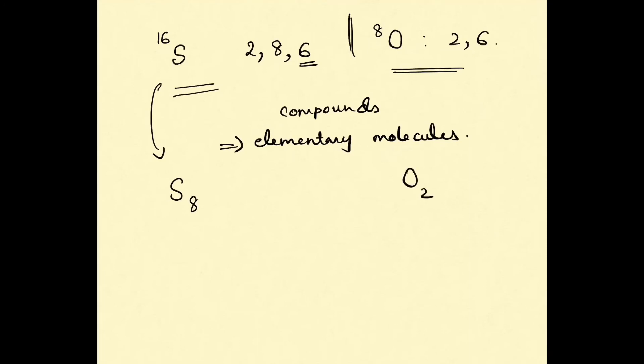Let's consider another element: sulfur, which has atomic number 16 and electronic configuration 2, 8, 6. This is similar to oxygen, which has 2, 6. But the way these two elements form their elementary molecules is quite different—the most common form of sulfur is S8, while oxygen is O2.